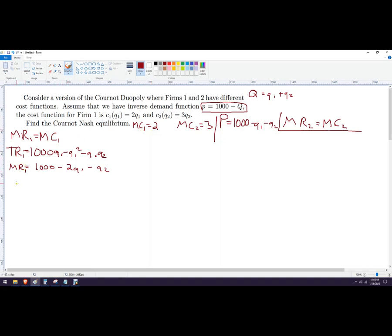And this is going to give us something called the best response function. So MR1 equals MC2. So MR1 is this long thing. It's all going to equal 2. So we're going to do some rearranging here. We'll send this guy over there. It becomes 998. And we'll send this over to quantity 1.